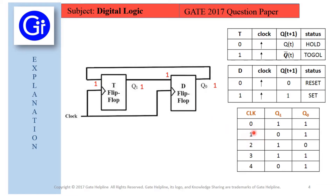For clock cycle 1, we trigger the circuit. The T flip-flop has input 1, so it toggles — QT bar. Since it was initially 1, it becomes 0. The D flip-flop has input 1, so it sets — the next state is 1. After clock cycle 1, Q1=0 and Q0=1.